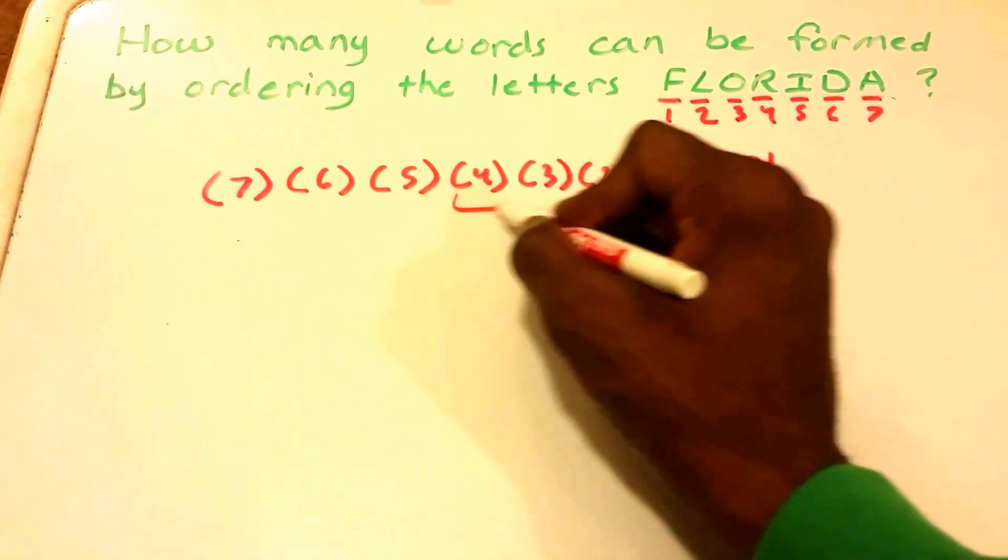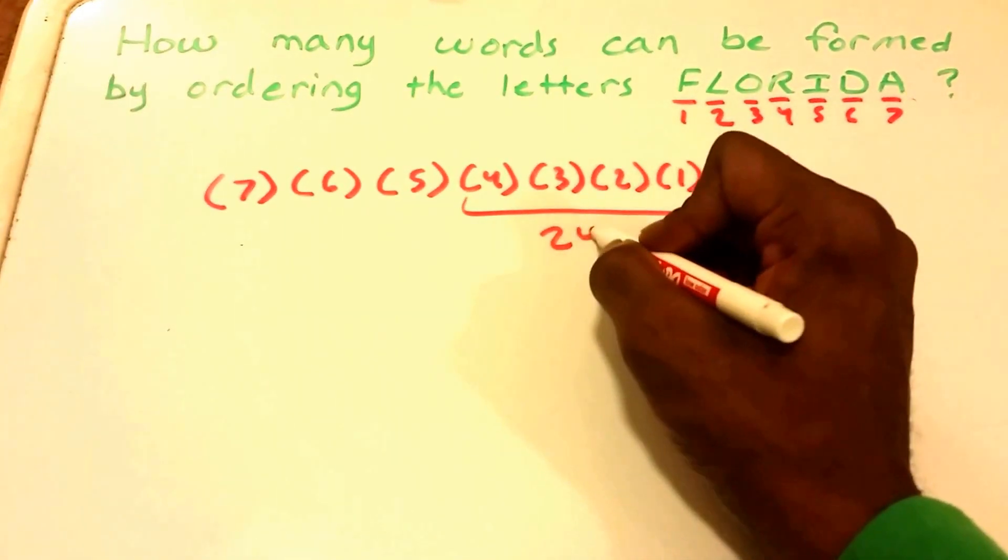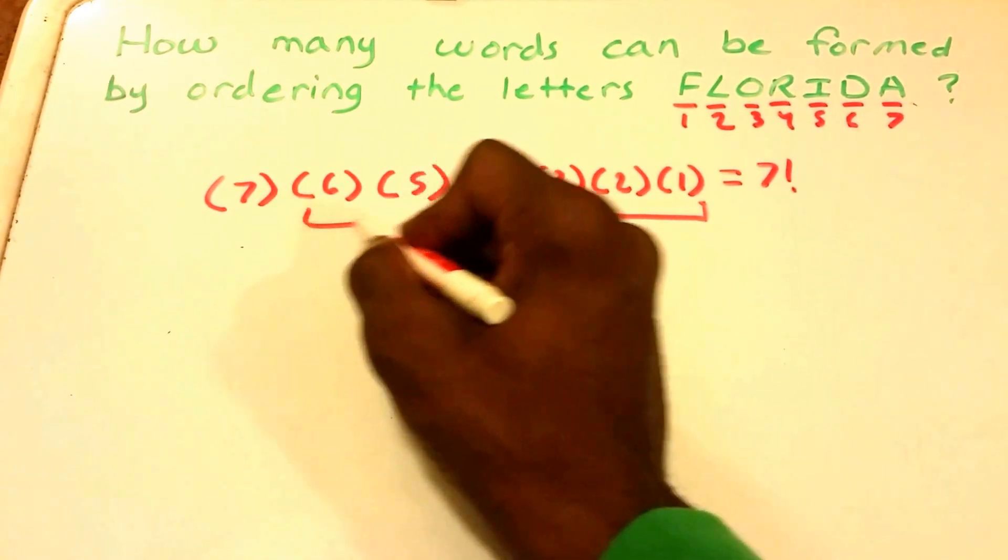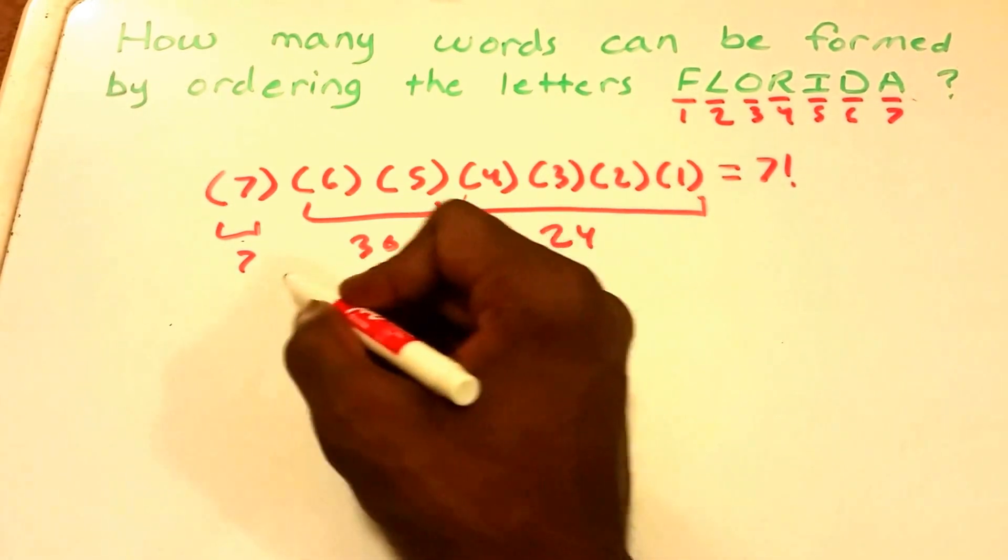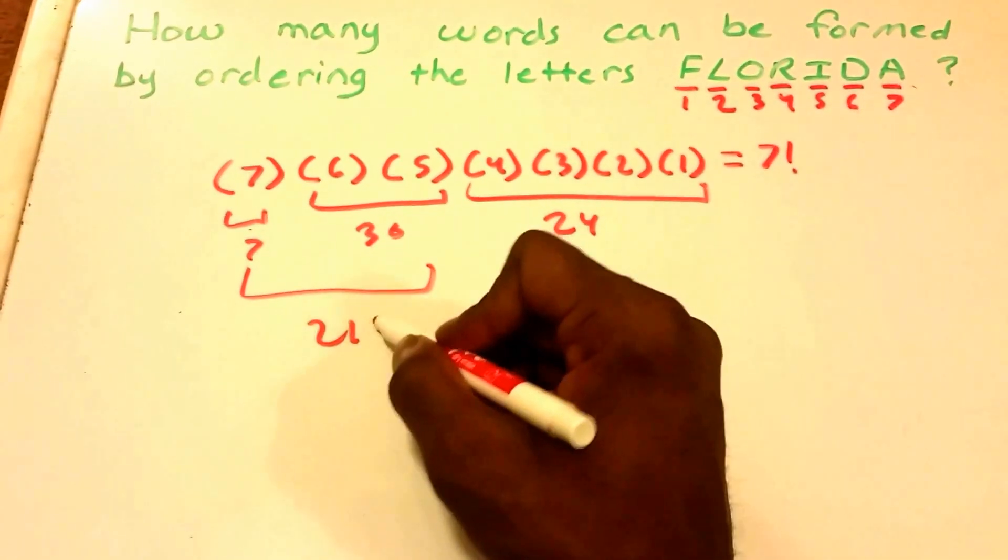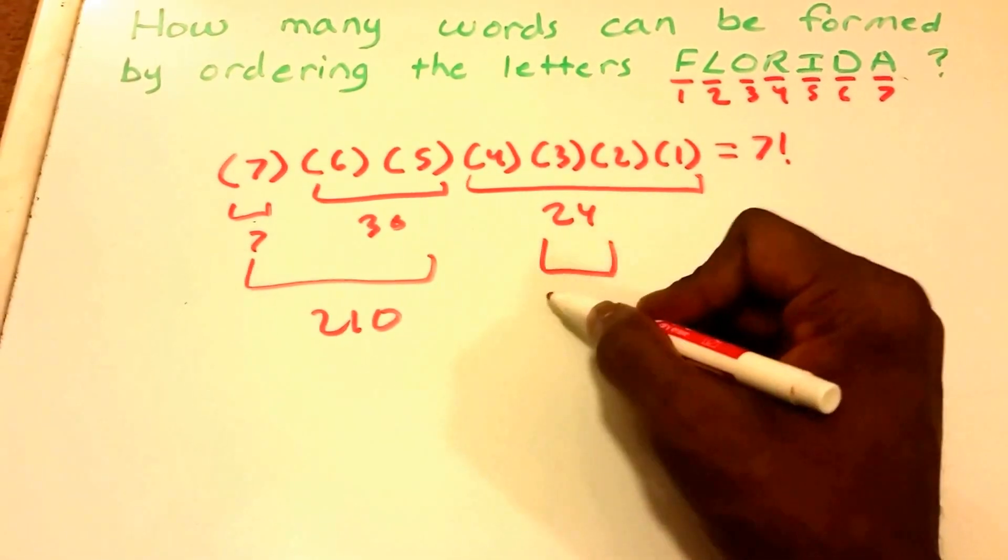Group some of these. We get 24 here, we get 30 here, and we get seven, get 210, you get 24, and these are still being multiplied together.